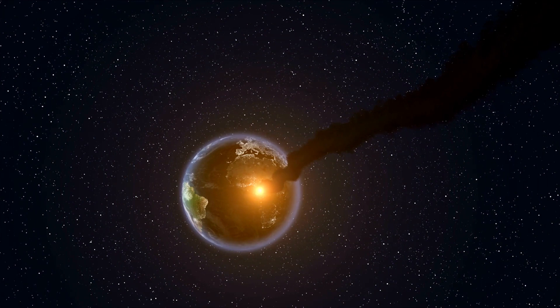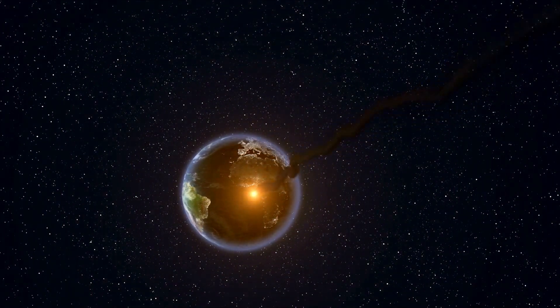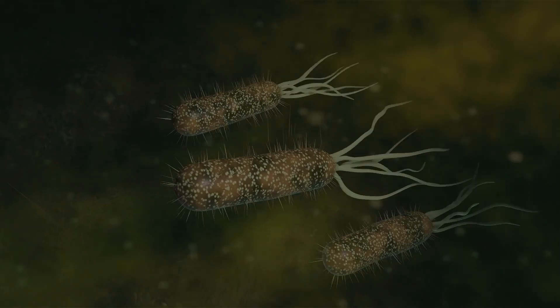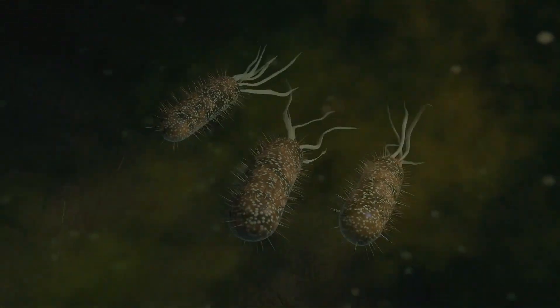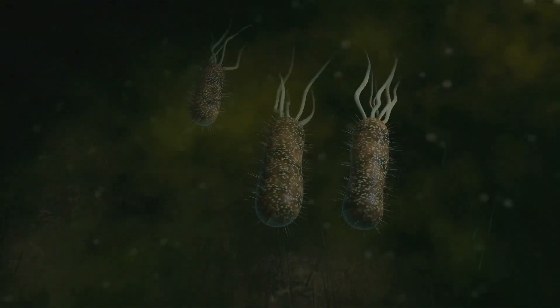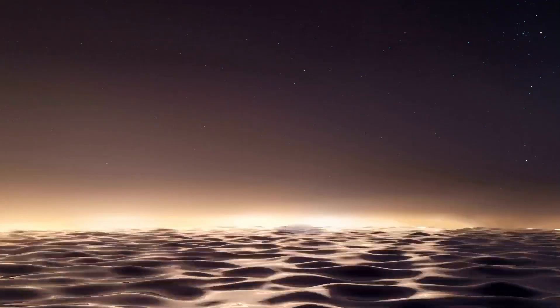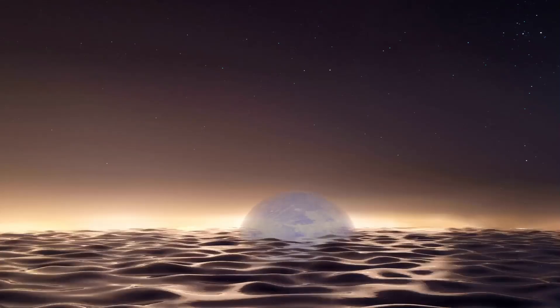Hycean worlds could have masses up to 10 times that of Earth and radii twice as large. However, instead of being scorched infernos, they would feature a colossal layer of water, potentially making up as much as 90% of the planet's mass. These dense atmospheres could trap heat from a star, allowing liquid water to exist over a much broader range of distances from the star than on rocky planets like Earth.